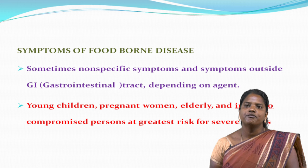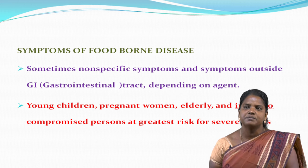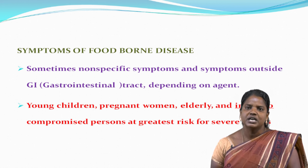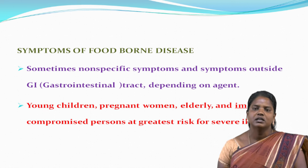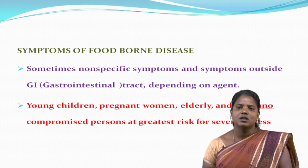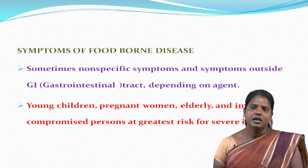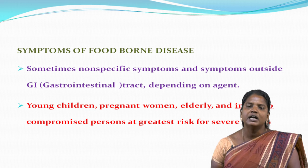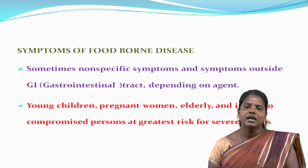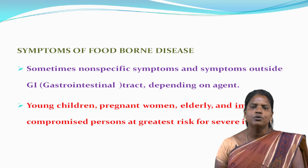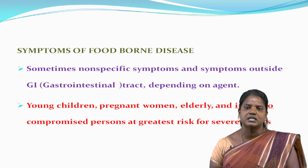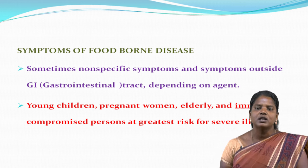Symptoms of foodborne diseases are sometimes non-specific and may occur outside the gastrointestinal tract, including the large and small intestine, depending on the causative agents. Young children, pregnant women, elderly, and immunocompromised persons are at greatest risk for severe foodborne illness.